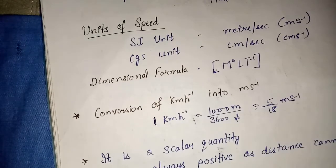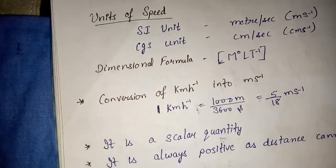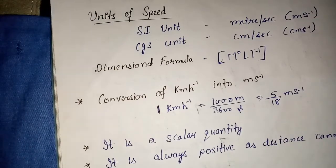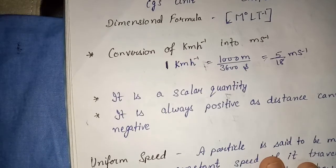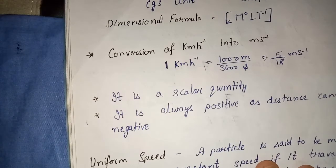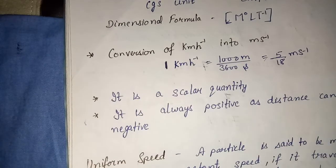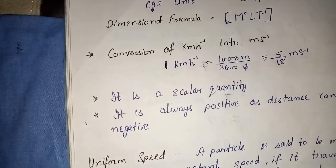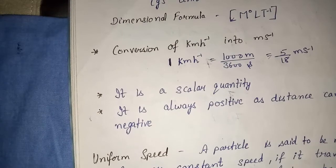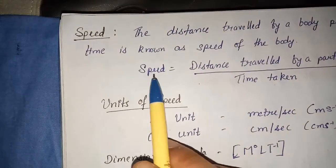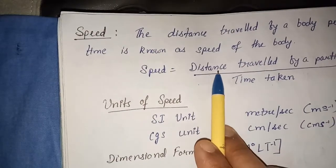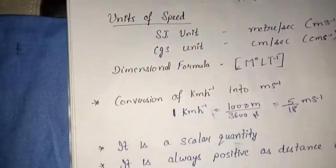So here we have converted the unit of speed from kilometer per hour to meter per second. Next thing, speed is a scalar quantity. Distance is a scalar quantity, therefore speed is also a scalar quantity.